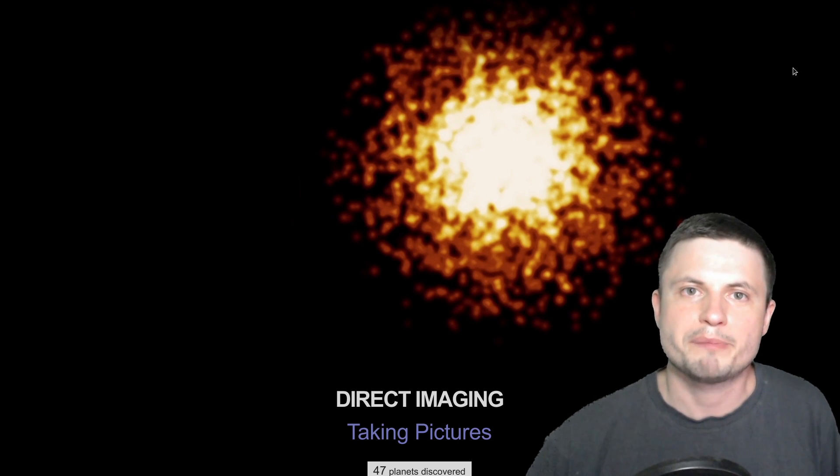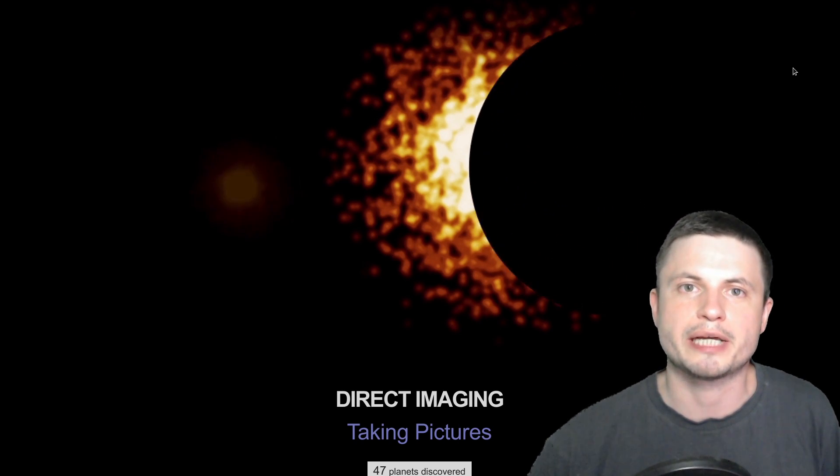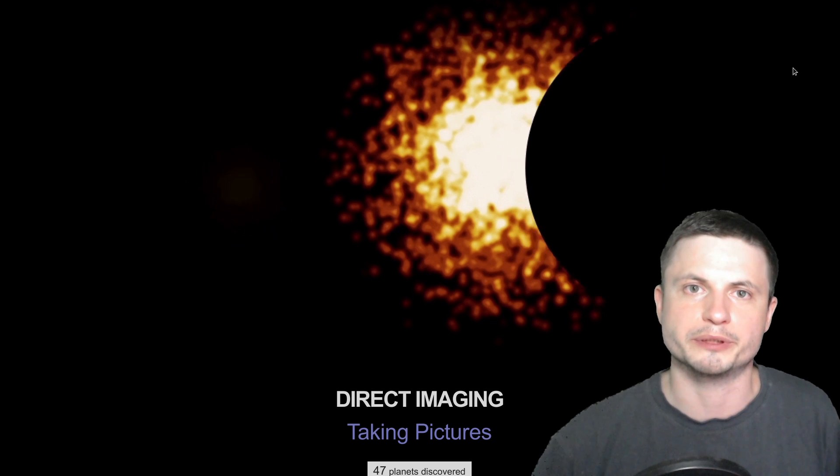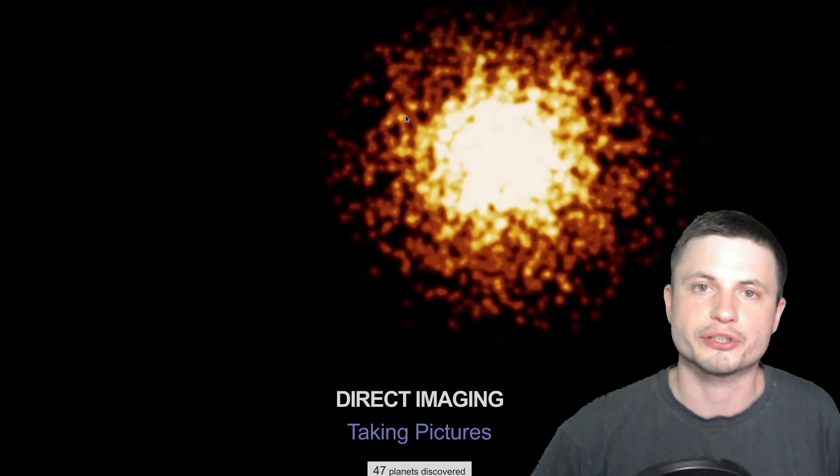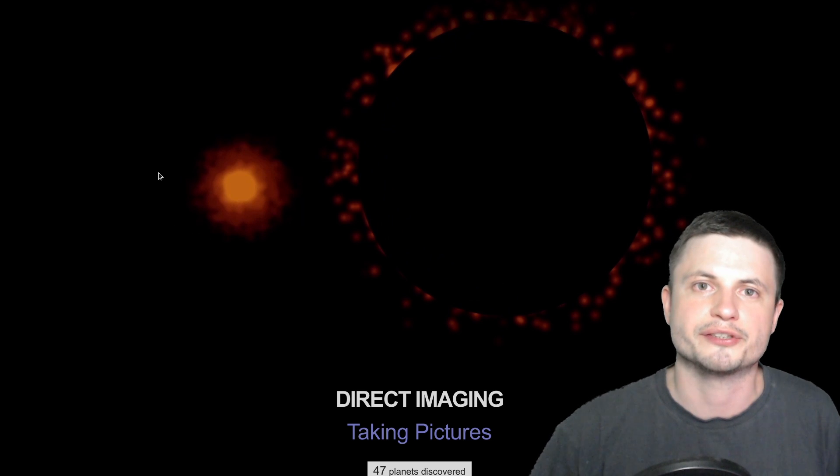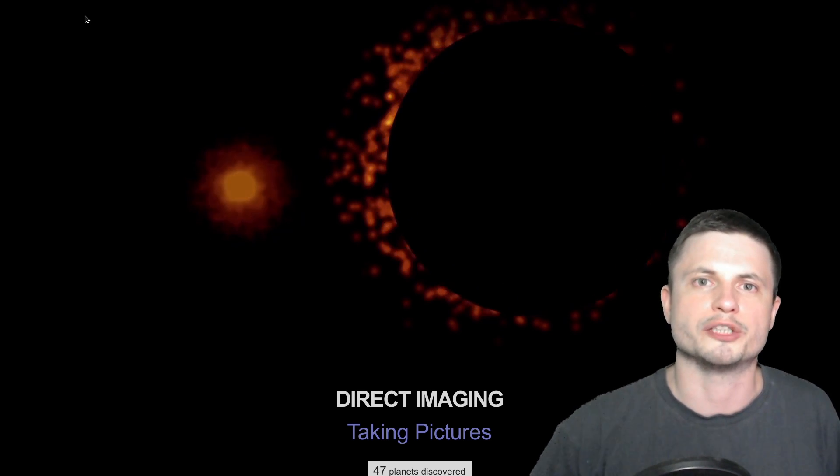The most obvious method is of course the so-called direct imaging, literally looking at the planet and seeing it somewhere out there. That's of course if the planet is really, really big. We do have to cover the star as you can see and this is the only way that those planets can be seen by basically removing the light from the star and then seeing the planets. We've discovered a few planets this way as well.